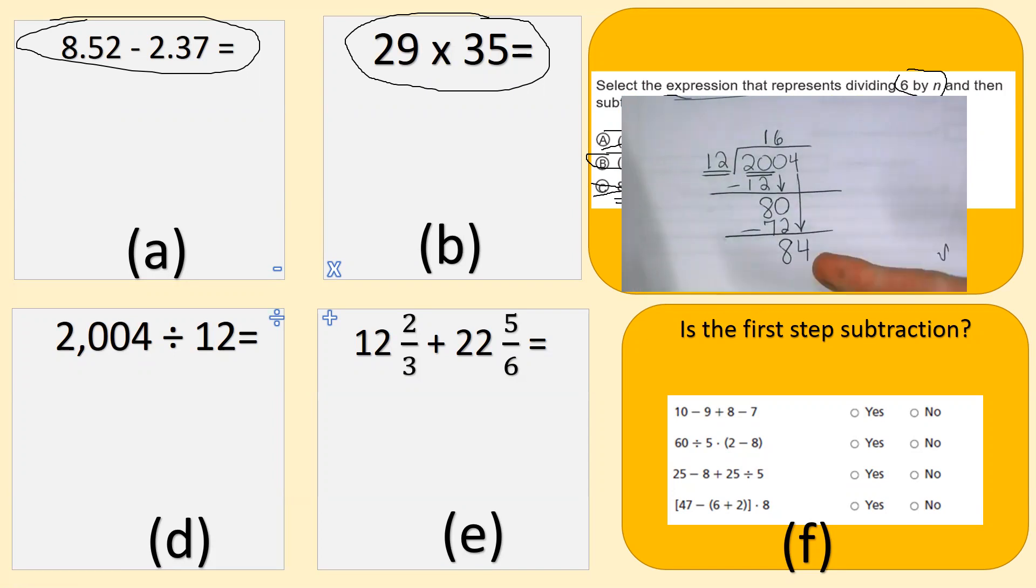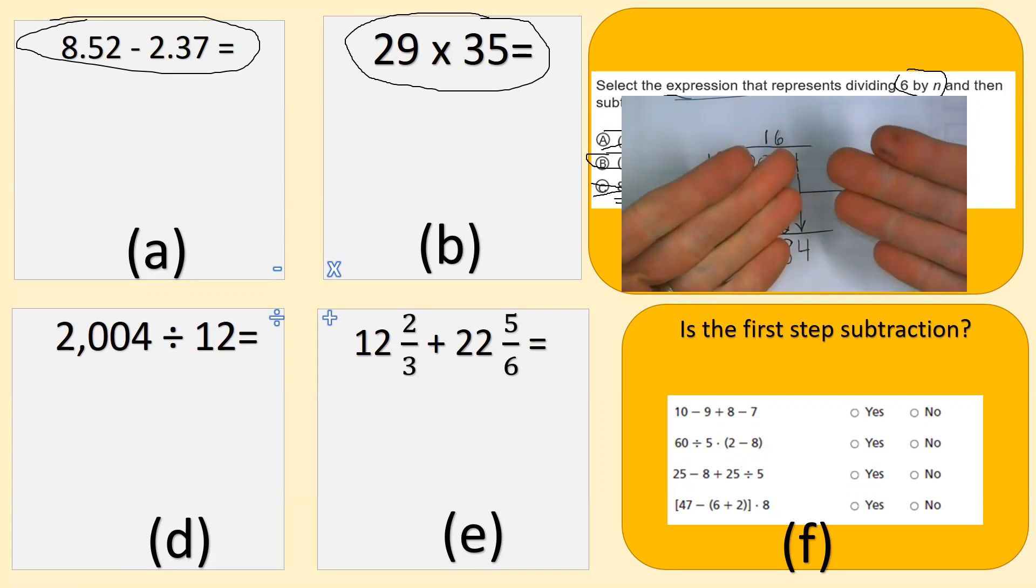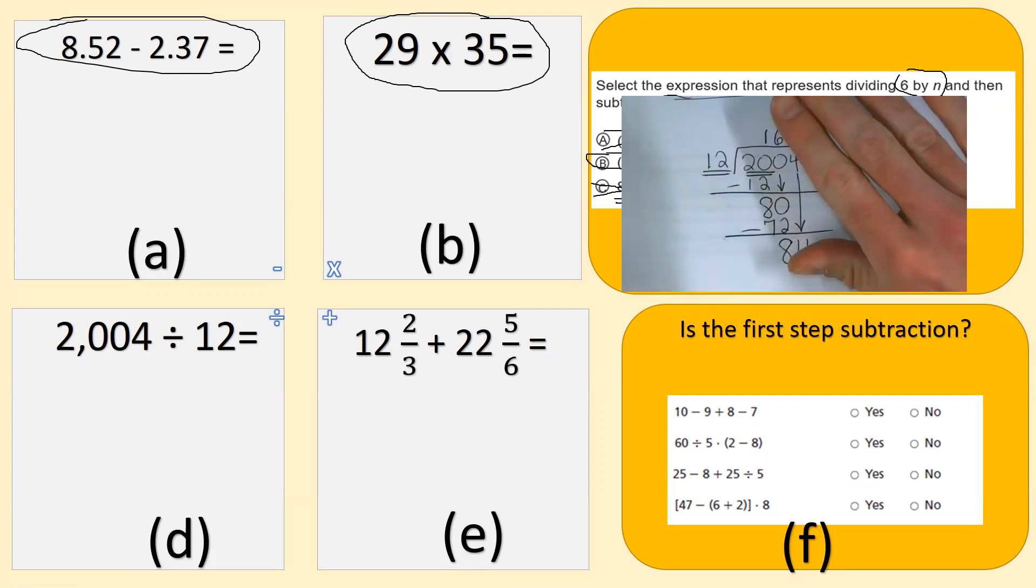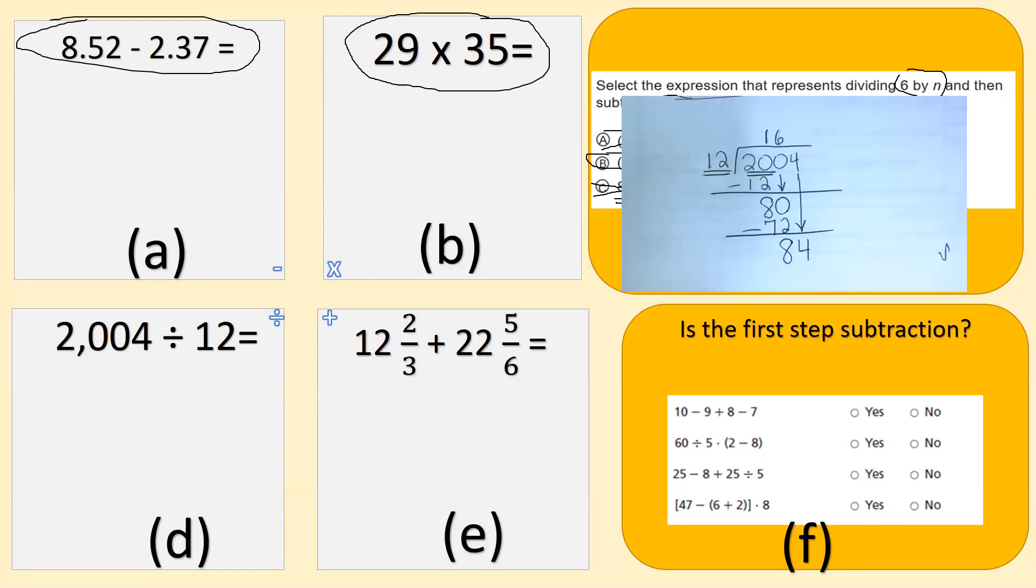And then 12, 24. If this is 24, this is 48. And if that's 48, then this is 96. Yikes. So 12, 24, 36, 48, 60, 72, 84. So 7 would be 84. So the answer is 167.